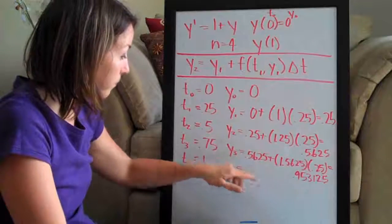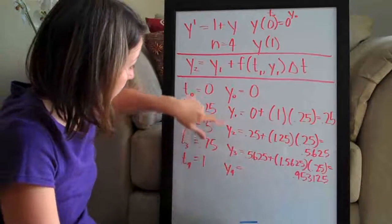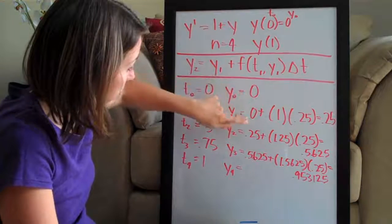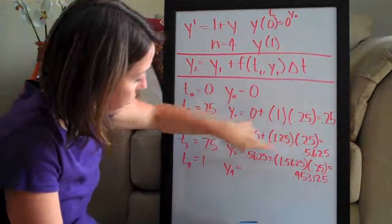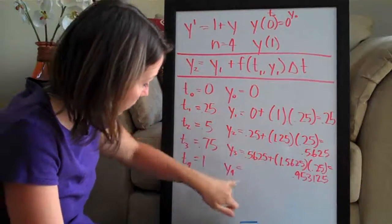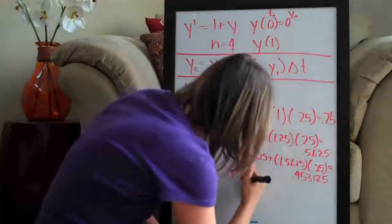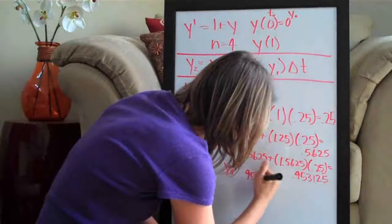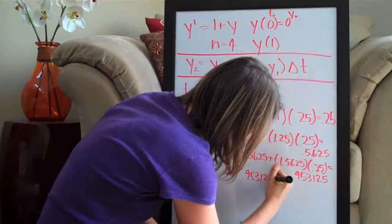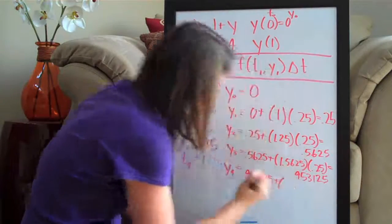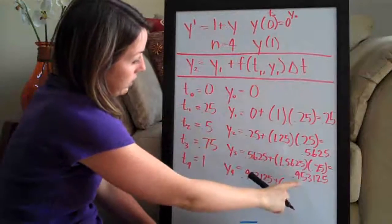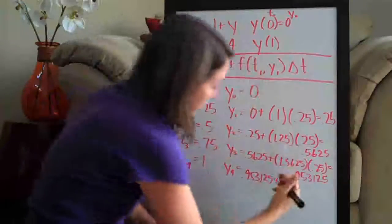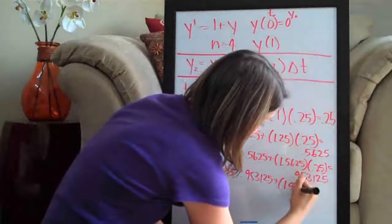Now y4, you can see the pattern, right? We had 0 here, we plugged in 0. We had 0.25, we plugged in 0.25. We had 0.5625, we plugged in 0.5625. So the first term here is going to be 0.953125 plus the value of the function when we plug in the previous point, which we're plugging in this value for y is going to be 1.953125.